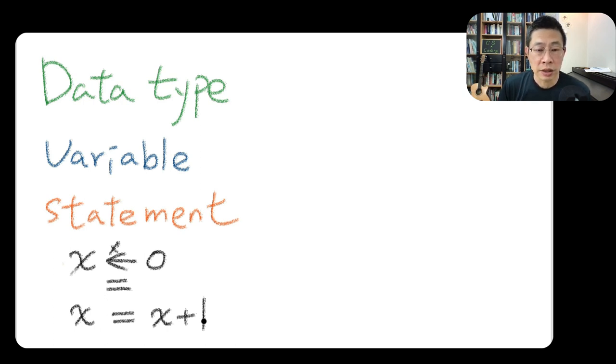So this is not a condition to check if x equals x plus one. Of course, it's not the truth, right? It's false. But this is assignment. Be careful when we learn assignment and the boolean to compare two values. Some language will use two equals signs to mean to compare the value.